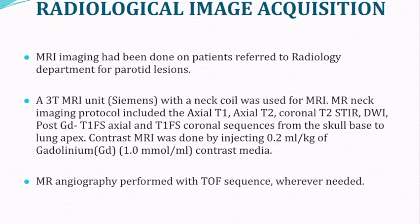MR imaging was performed on patients referred to the ENT/OLG department for parotid lesions. A 3 Tesla MRI unit with dedicated neck coil was used. The MR neck imaging protocol included axial T1- and T2-weighted images, coronal T2-STIR, DWI sequences, and post-contrast axial and coronal sequences. Gadolinium-based contrast media was used, and MR angiography was performed with TOF sequences whenever needed.